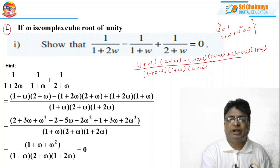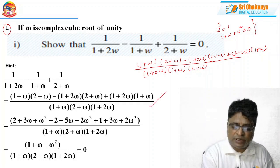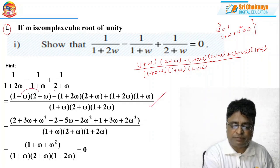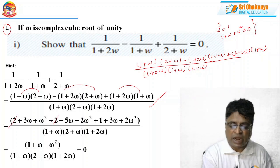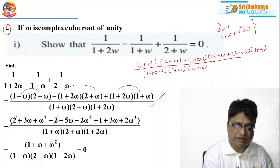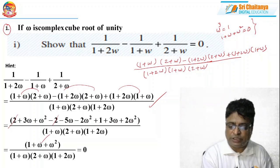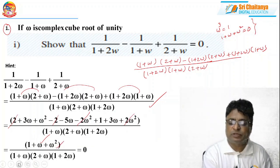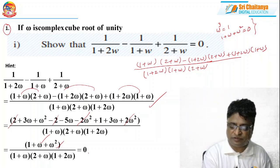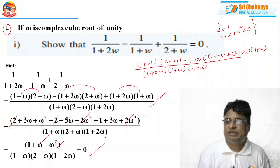After taking the LCM and multiplying all terms, the 2s cancel, the ω terms give 6ω − 5ω = ω, and the 2ω² terms cancel, leaving 1 + ω + ω². The numerator simplifies to 1 + ω + ω², which equals 0. Since the numerator is 0, zero divided by anything is 0. That completes problem number 1 — a simple but important question.